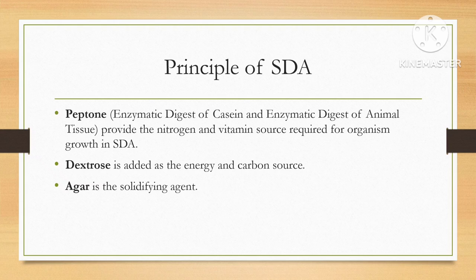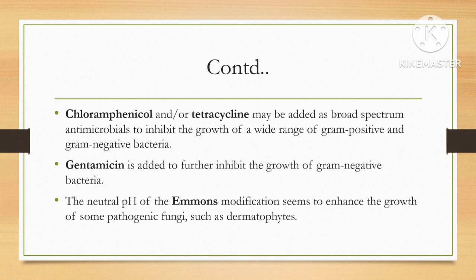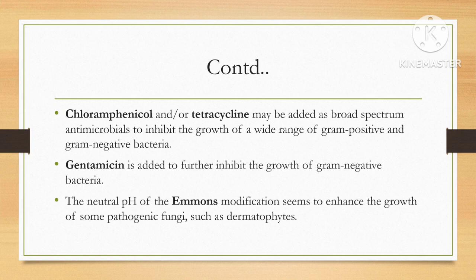Chloramphenicol, tetracycline, or gentamicin are added as broad-spectrum antimicrobials with activity against various gram-positive and gram-negative bacteria. Gentamicin is added to further inhibit the growth of gram-negative bacteria. The neutral pH of the Emmons modification (6.9 ± 0.3 at 25°C) seems to enhance the growth of some pathogenic fungi such as dermatophytes.